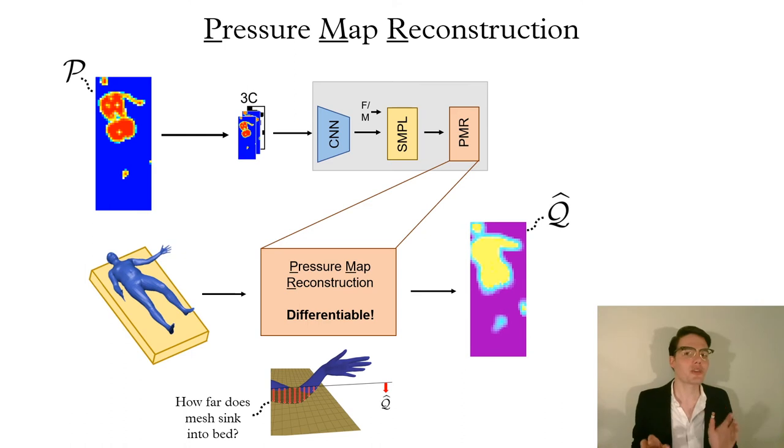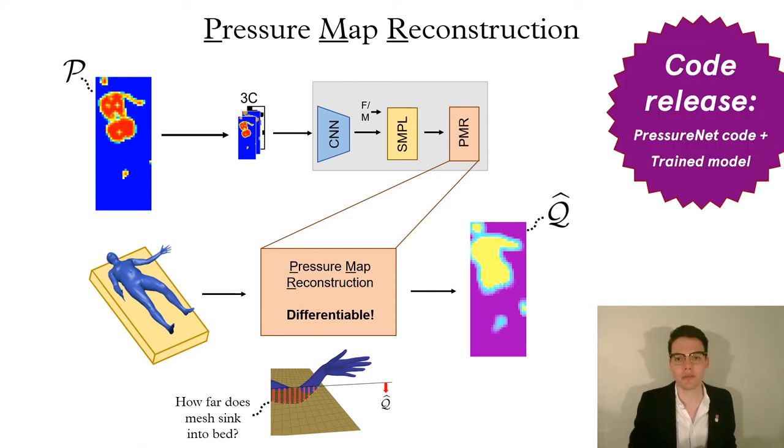PMR stands for pressure map reconstruction. This component differentially reconstructs pressure maps, which promotes consistency between the input and the output. We have released the code for PressureNet along with our best trained model.